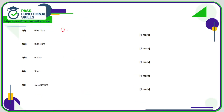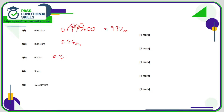0.997 kilometres — write it out, put some zeros on the right-hand side, and move the decimal point three positions. That gives 997 metres. So 0.244 will become 244 metres. 0.3 can be written with three decimal places as 0.300, so that's 300 metres. 9 kilometres in metres: just multiply by 1000. When it's a whole number and you're multiplying by 1000, just stick three zeros on the end. Nice and easy.